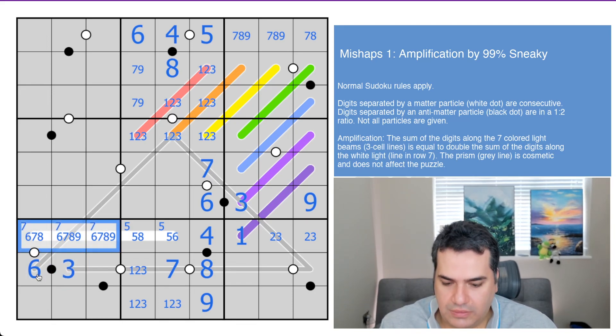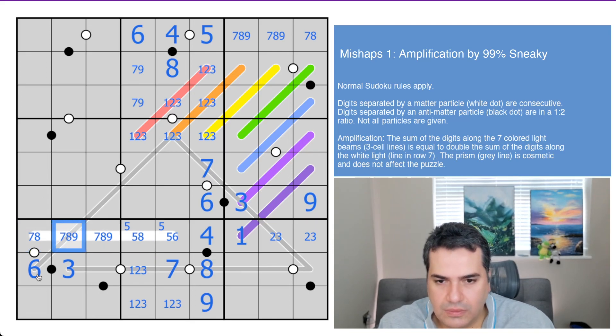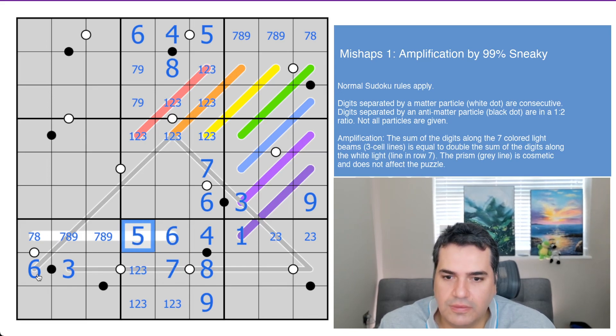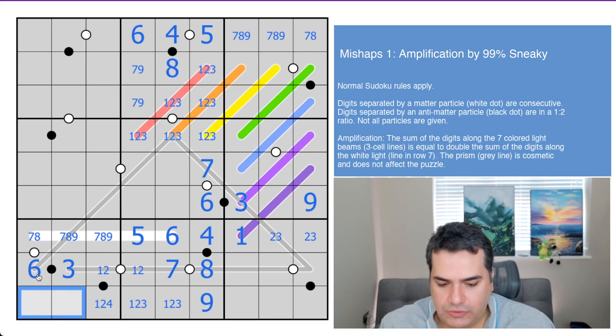And actually this black kropki dot tells us immediately that this has to be a six. Three. That's not six. That's a seven, eight, nine set. Therefore, that's the six. That's the five. That's not three. One or two. And it can't be paired with a three, so that is one or two. That's one, two, or four. And five has to be down here. In fact, four also has to be down here.